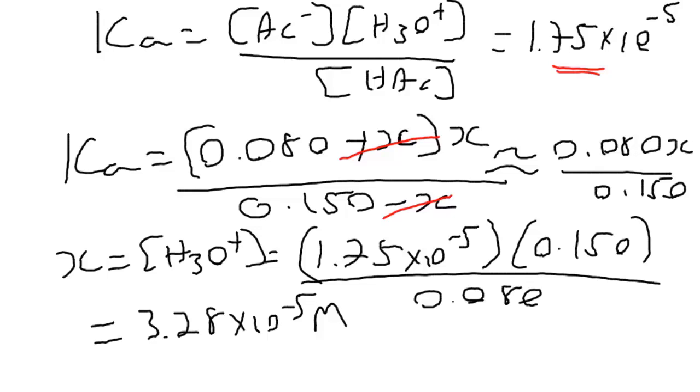And that equals 3.28 times 10 to the minus 5 molar. That's the H3O+ concentration, take the log of that, the negative log is the pH, and we get an answer of 4.48 for the pH of the buffer.